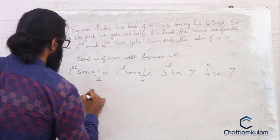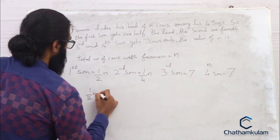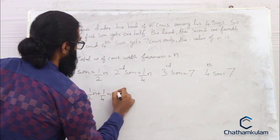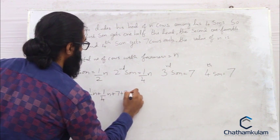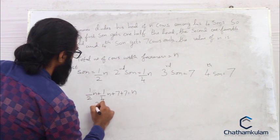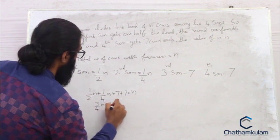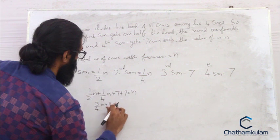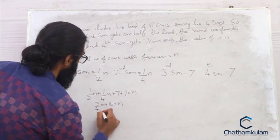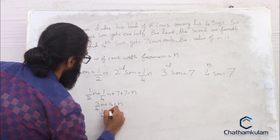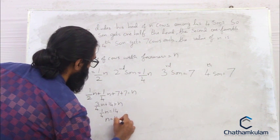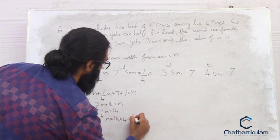So we equate: n/2 + n/4 + 7 + 7 = n. That gives us 3n/4 + 14 = n, so n/4 = 14, therefore n = 14 × 4 = 56. So 56 is the number of cows the farmer has.